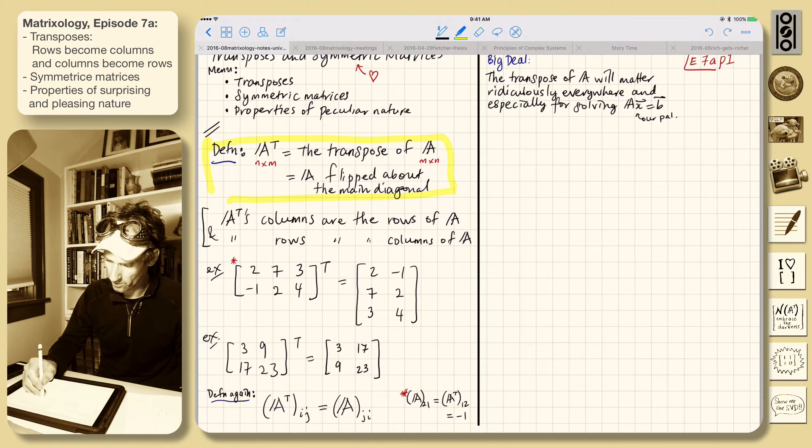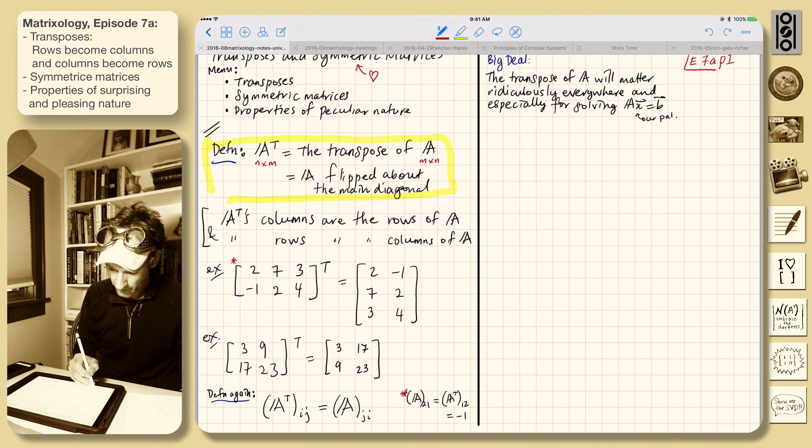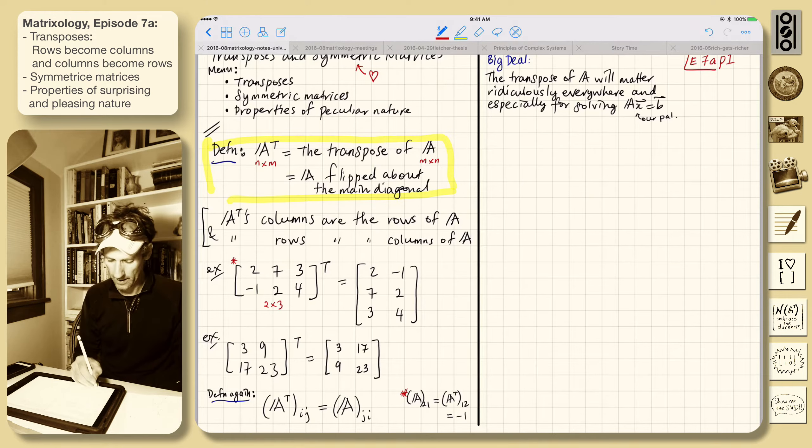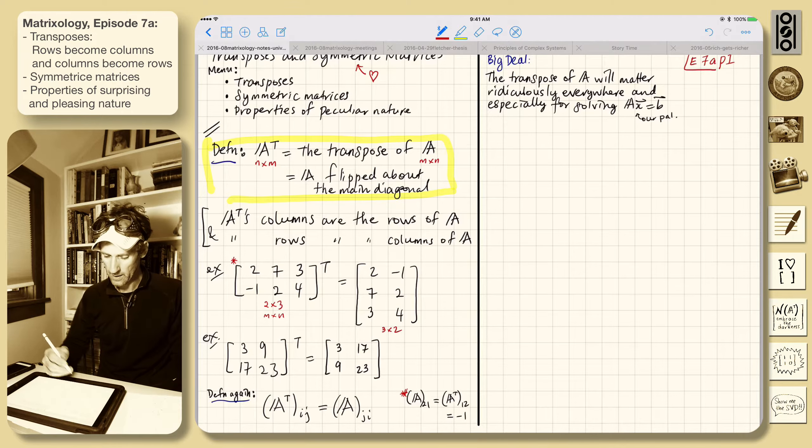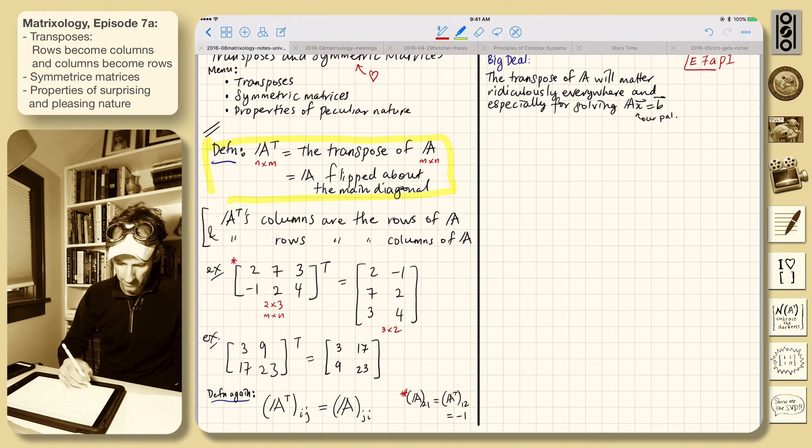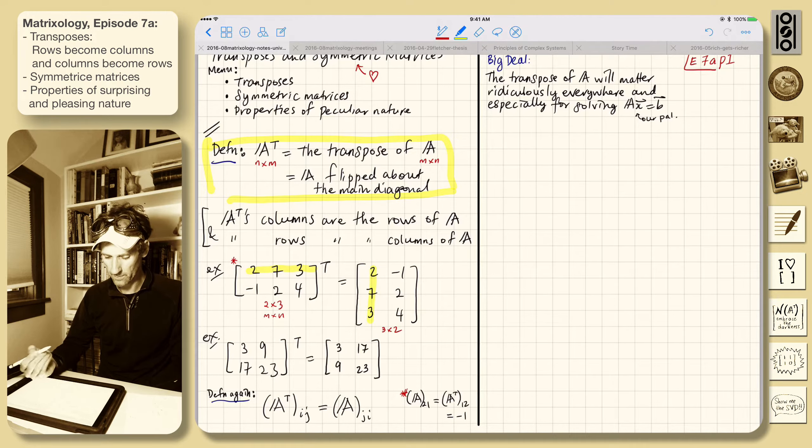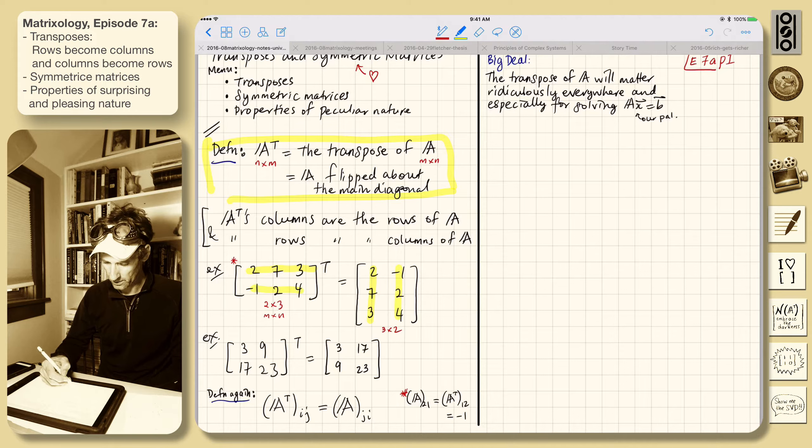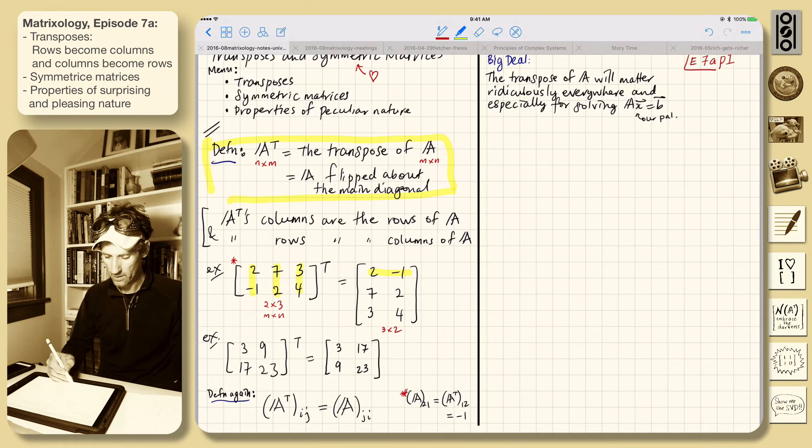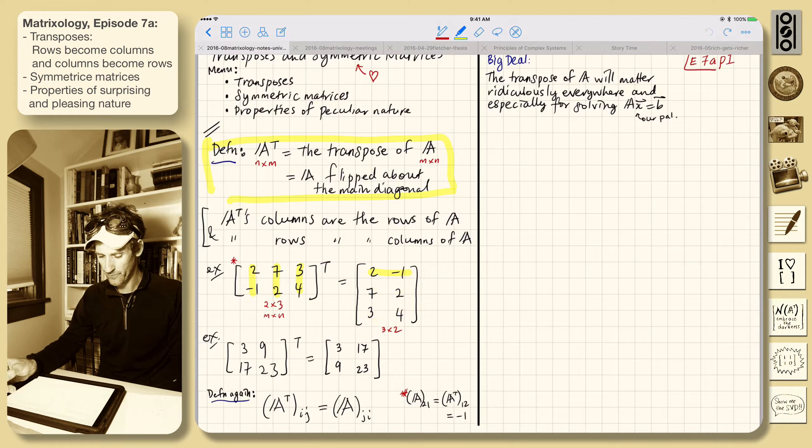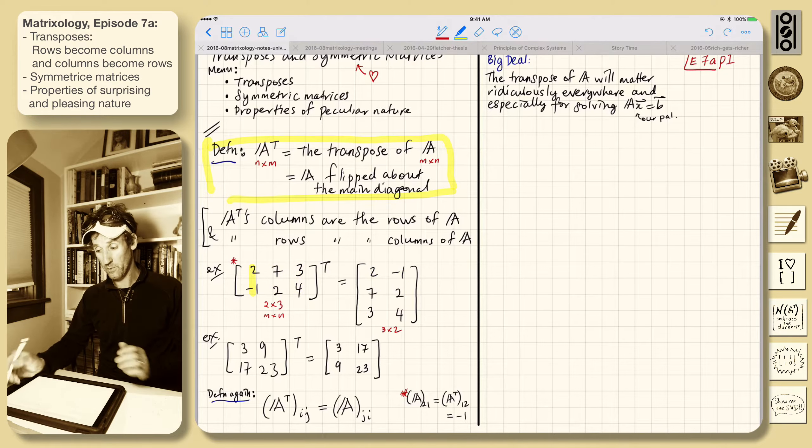Here's an example, always good to write this in. Two by three, M by N. So you flip it, the dimensions change. This becomes a three by two, three rows, two columns. Very simple. That's the first row becomes the first column, the second row becomes the second column. And if you want, you can go back and think of it as the first column becomes a row, and these columns become the second and third rows.